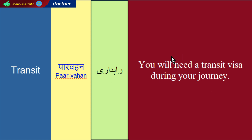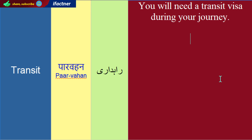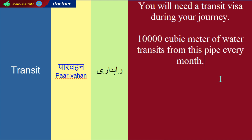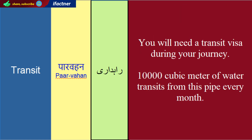तो एक तो हमने देख लिया कि transit को transit visa की sense में कब यूज करते हैं, transit station क्या होता है. इसके अलावा transit, जैसे मैंने आपको बताया कि gas का गुजरना, पानी का गुजरना, किसी pipe के ज़रिए, किसी नहर के ज़रिए — उसको भी transit करना कहते हैं. जैसे: 10,000 cubic meter of water transits from this pipe every month. यानि हर महीने इस pipe के ज़रिए दस हजार cubic meter पानी गुजरता है — transit होता है.